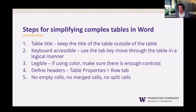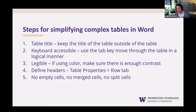Steps for simplifying complex tables in Word. First, always keep a table's title out of the table itself, so an assistive technology user can read the subject before deciding whether to read the data inside. This also provides a way for users to scan through the document faster using heading levels to determine where they are. Second, make sure the table is keyboard accessible — place your cursor in the first table cell and use the tab key to emulate what it's like for a screen reader moving through the table. Does the cursor move in a logical manner and does the flow make sense?